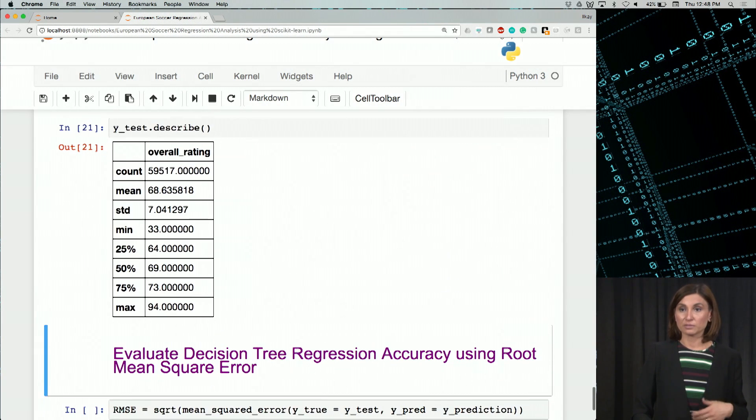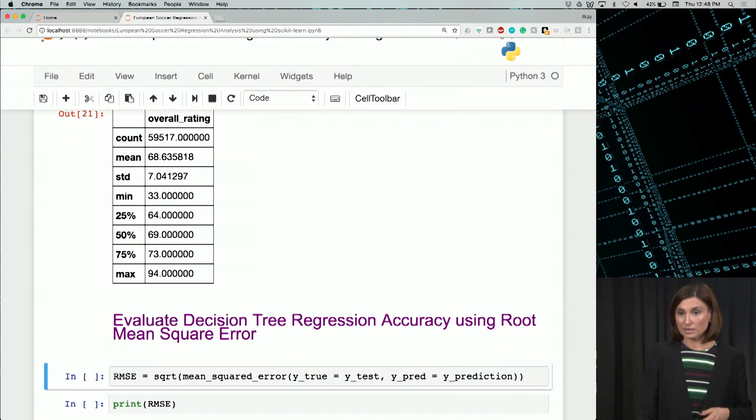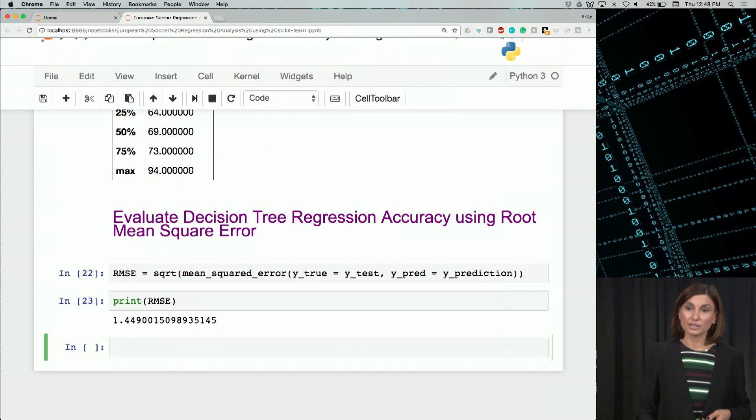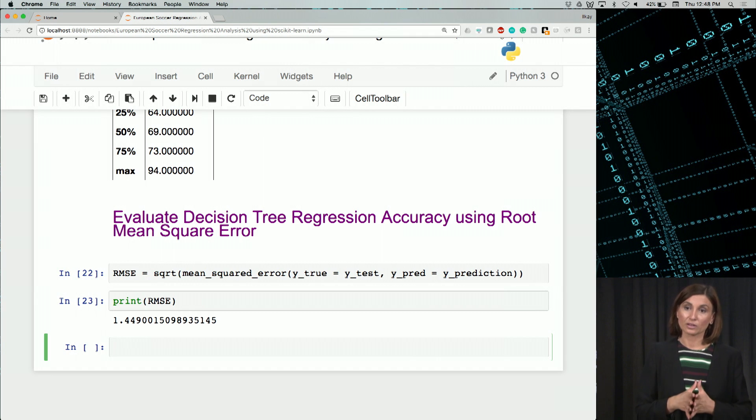Again, we can describe the test and do the RMSE for this decision tree regressor. So remember, our linear regression operation gave us an RMSE of 2.8. And the decision tree regression algorithm gave us an even lower one, 1.44, which is better in terms of prediction accuracy than the linear model.